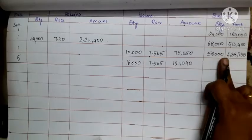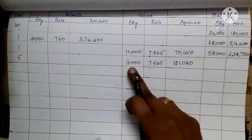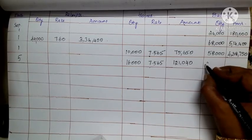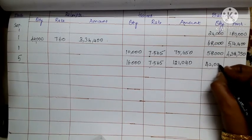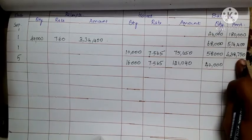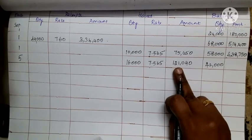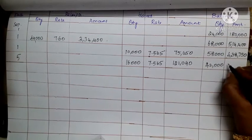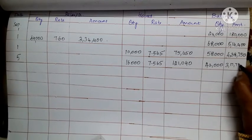The balance was 58,000. Less the issue of 16,000 gives a new balance of 42,000 units. The balance amount is 4,38,750 minus 1,21,040 equals 3,17,710.